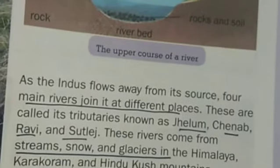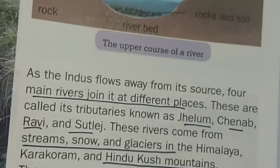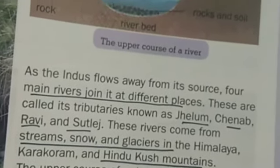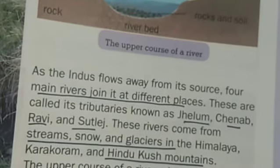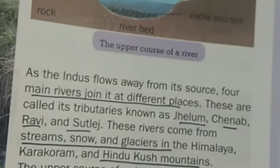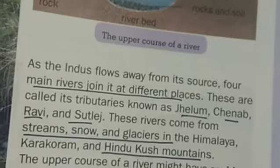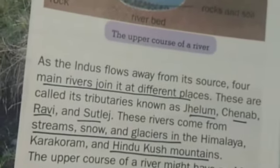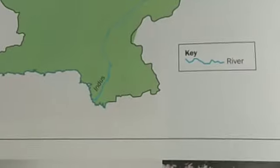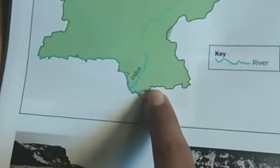As the Indus flows away from its source, four main rivers join it at different places. These are called its tributaries, known as Jehlam, Chinab, Ravi and Sutlej. These rivers come from streams, snow and glaciers in the Himalayas, Karakoram and the Hindu Kush mountains. The upper course of a river might have rapids, waterfalls and gorges. A gorge or canyon is a deep valley cut by a river. Here you can see all the rivers in our country — Sutlej, Ravi, Chinab, Jehlam — and they all flow through the province of Punjab. Here is the Indus river.